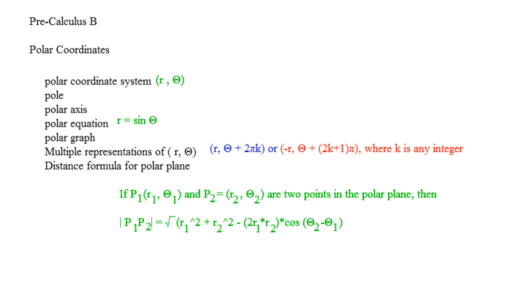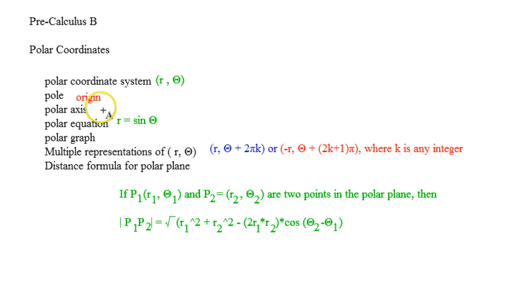Our origin in the polar coordinate system is going to be called the pole, and our polar axis is going to be the positive x-axis.